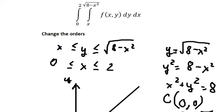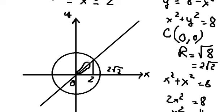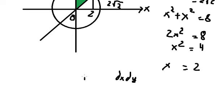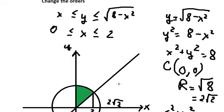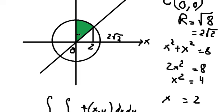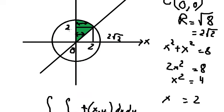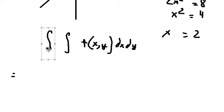Looking at the graph, y should be greater than or equal to x and smaller than the upper boundary. The region we need to focus on is this one here. Because we want to change the order, that means we change dy dx into dx dy. About dx, we can see that x equals y, so we need to create two double integrals — one for the line and one for the circle.